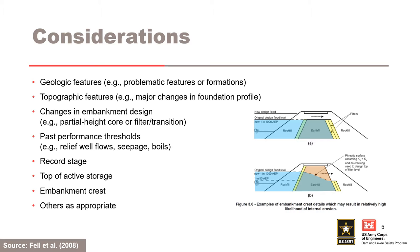The top figure is an example of a design change with the embankment cross section that occurs at 1 in 1000 AEP with a partial height impervious core and chimney filter. Flow through rock fill can occur above the impervious core. The bottom figure is an example of a design change that occurs at 1 in 50 AEP with a partial height chimney filter. Many USACE filters were designed for slope stability considerations, not defensive measures against cracking in the upper part of the embankment. As a result, an unfiltered exit exists above this elevation.